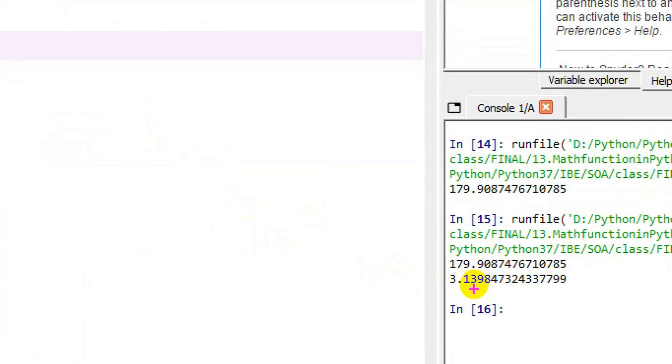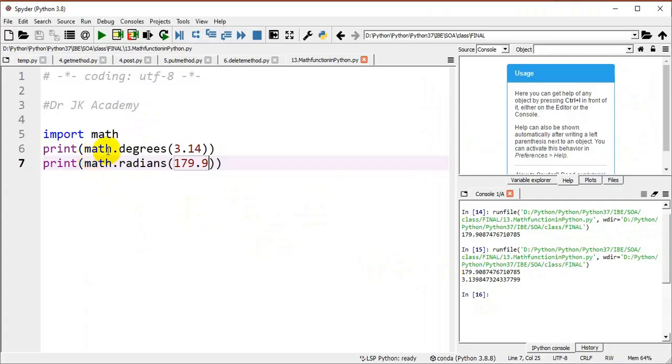Rounded it is 3.14. So this is the math.degrees and math.radians function.